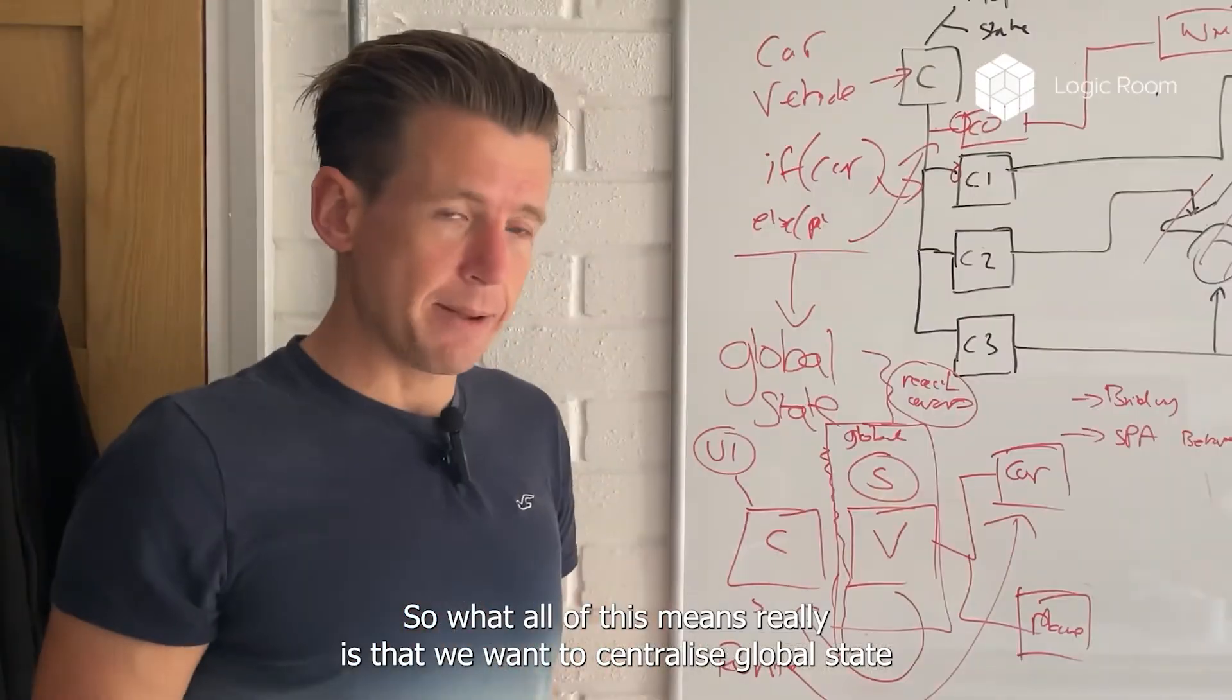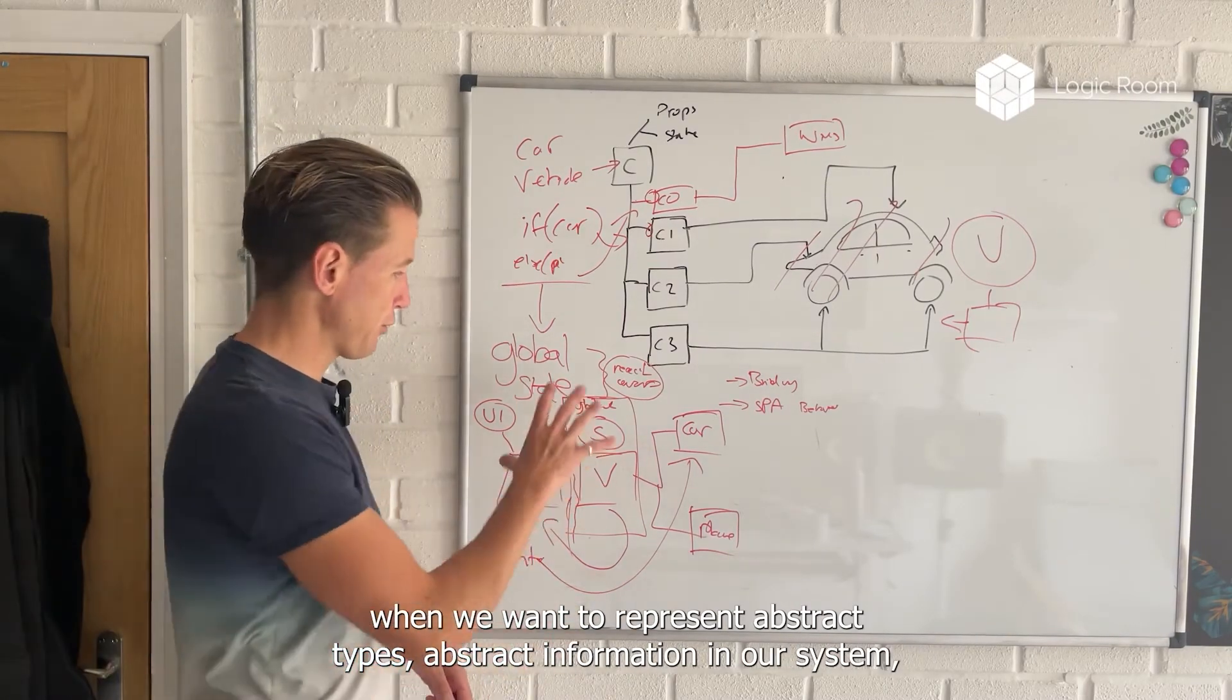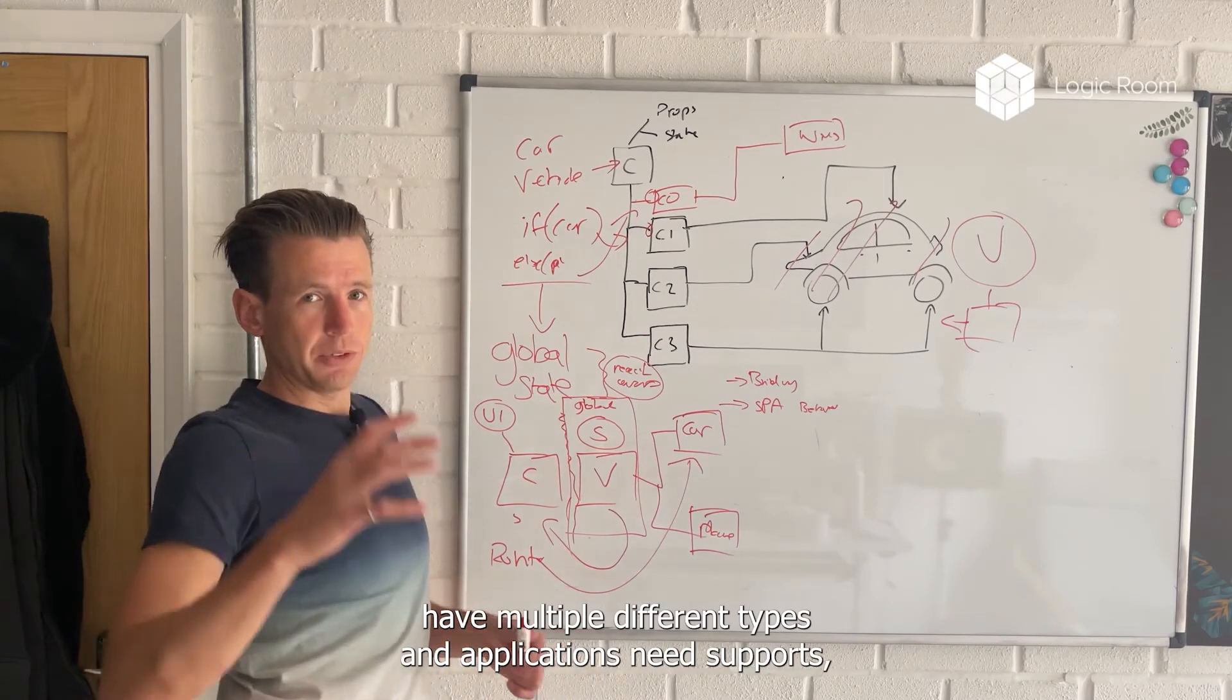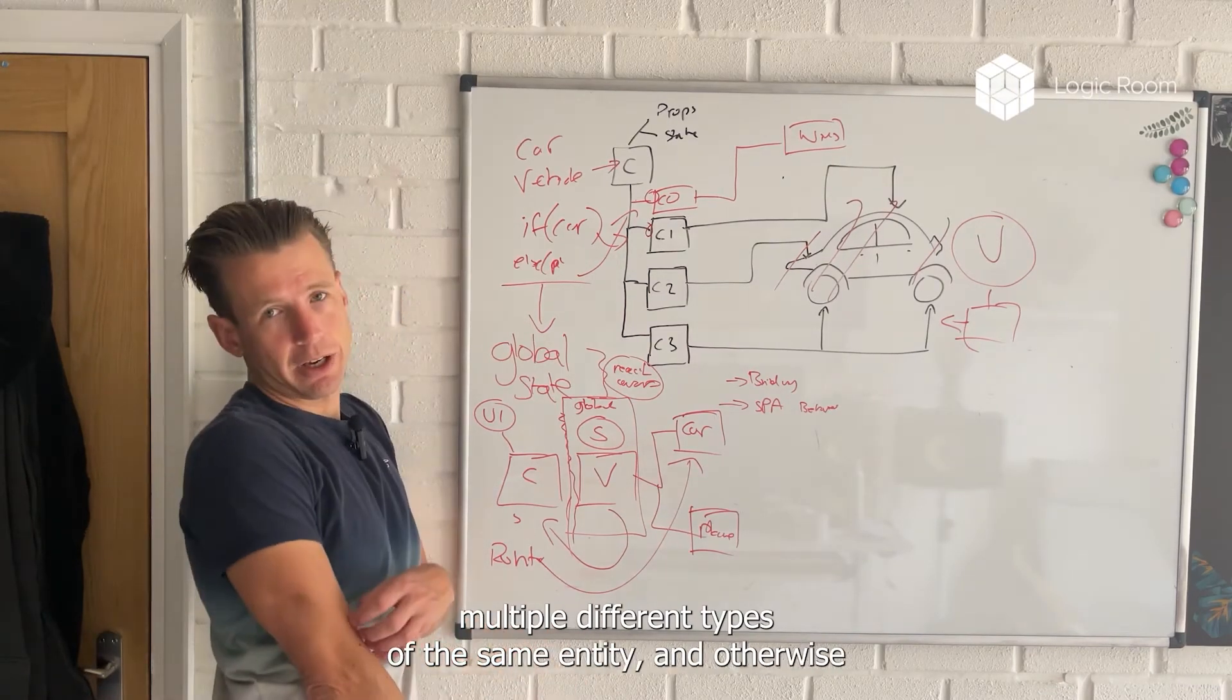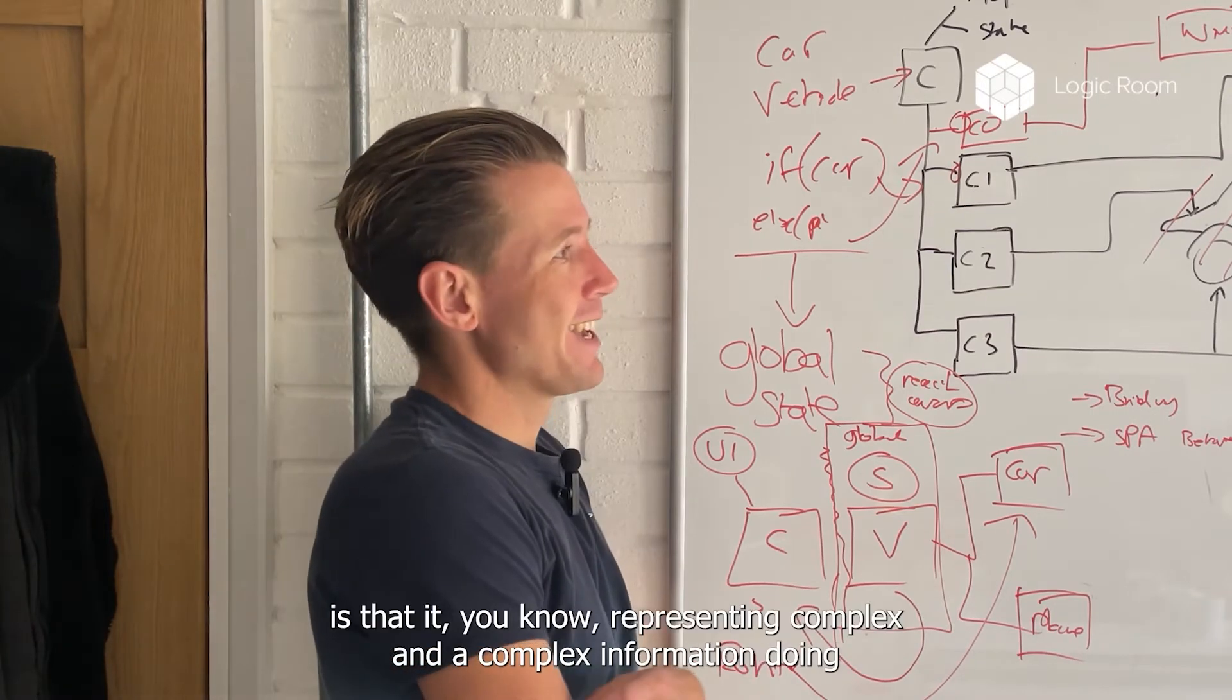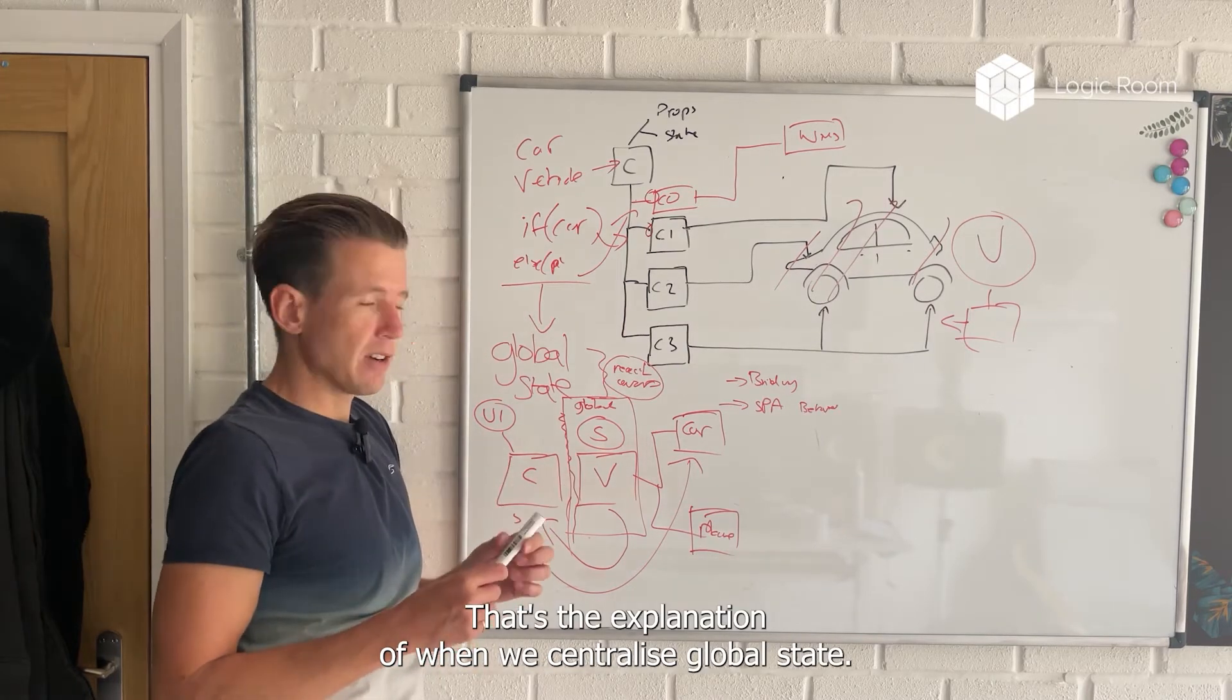So what all of this means really, is that we want to centralize global state, and we want to represent abstract types, abstract information in our system, which is normally a lot of the time, because normally businesses have multiple different types, and applications need to support multiple different types of the same entity. Otherwise the business wouldn't exist in the first place, because the whole point about a business is that it's representing complex information, doing complex processes.